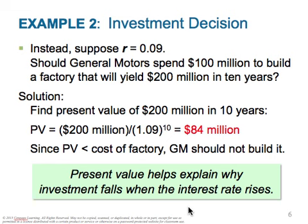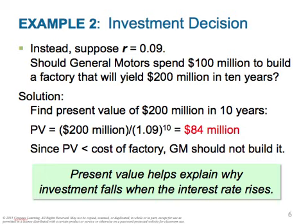In the first example, when the interest rate was 6%, GM stood to make $12 million. When it rises to 9% — not a huge change, but a change nonetheless — they stand to lose $16 million on this deal. Think about that. Very important decisions being made here.